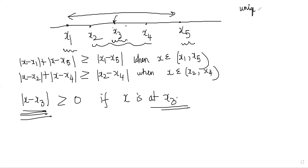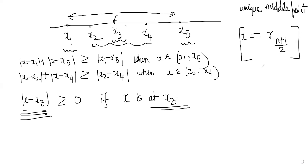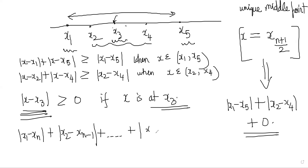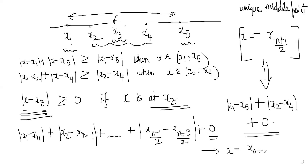When we are left with the single middle point x3, we need to minimize |x - x3|, which can be made zero by setting x = x3. So when n is odd, the minimum occurs at the unique middle point x = x(n+1)/2. The minimum value of the overall expression is |x1 - xn| + |x2 - x(n-1)| + ... + |x((n-1)/2) - x((n+3)/2)| + 0.